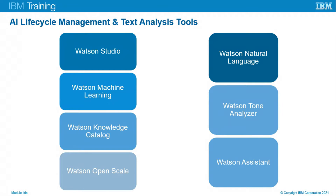Watson Natural Language Processing uses deep learning to extract metadata from text, such as categories and keywords, sentiments and emotion, relation and syntax. Watson Tone Analyzer uses linguistic analysis to identify specific tones such as anger, fear, and disgust, and can detect social propensities such as extroversion and language styles, including analytical, confident, and tentative detection from text.